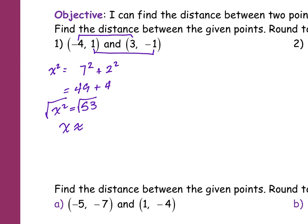Why do I sometimes use the approximately equal sign? Because I round it. If it's exactly equal to — if I don't have to round — I use the equal sign. If I do have to round, I use the approximately equal to sign. Does that make sense? Everyone okay with that?